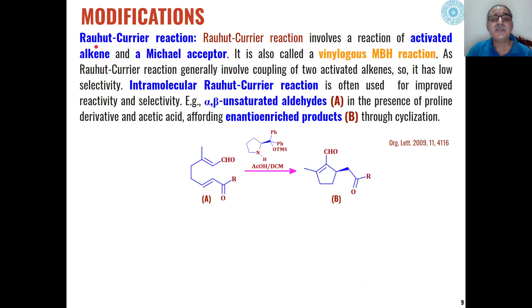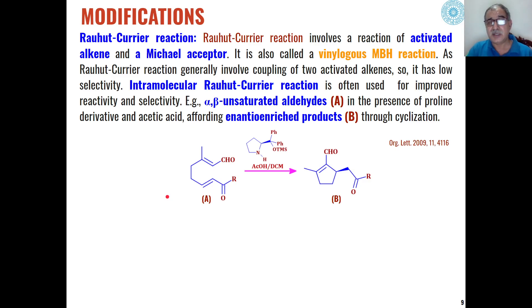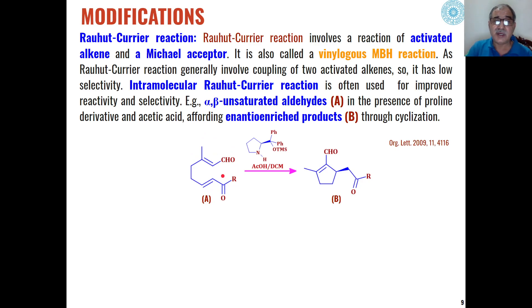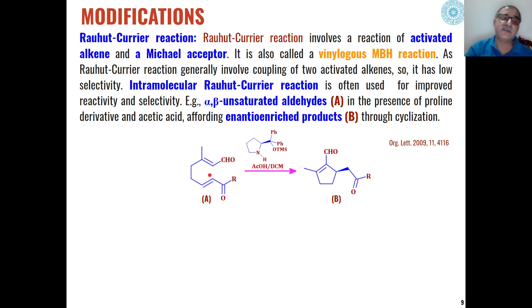The next modification is the Rawal-Korea reaction, where the activated alkene and the Michael acceptor are present within the same molecule. This is a vinylogous MBH reaction — an intramolecular reaction — and this intramolecular nature improves the reactivity and selectivity of the MBH reaction.